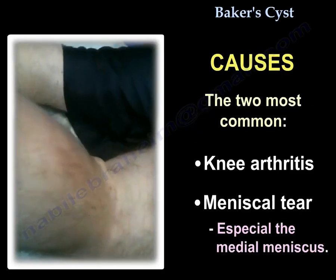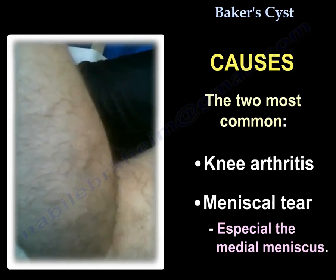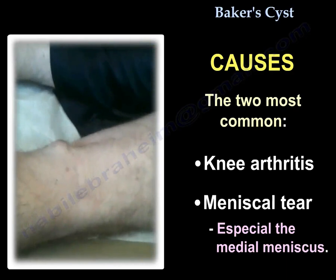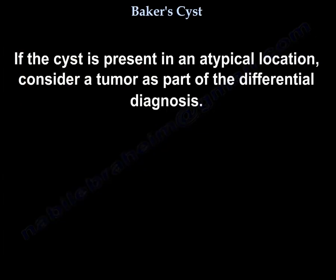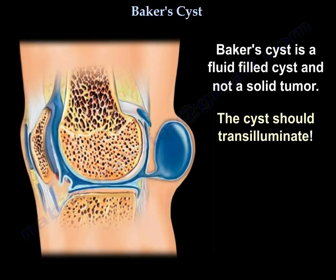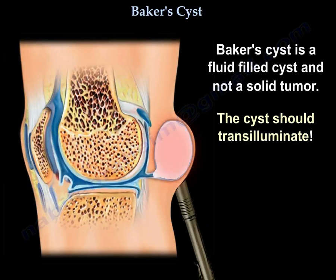What causes the cyst? The two most common causes are knee arthritis and meniscus tear, especially the medial meniscus. Tears of the posterior horn of the meniscus that extend to the capsule may cause a defect or one-way valve to develop between the knee joint and the bursa lying between the gastrocnemius and semimembranosus. If the cyst is not in a typical location, consider a tumor as part of the differential diagnosis.